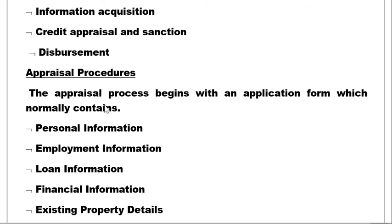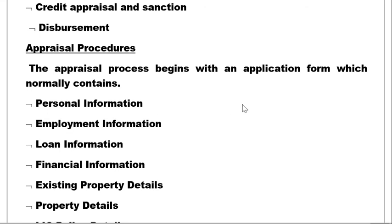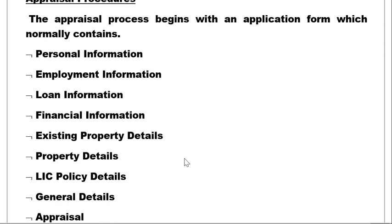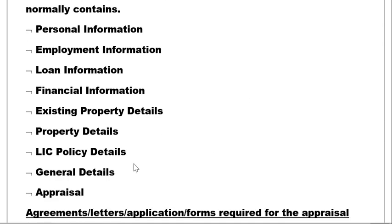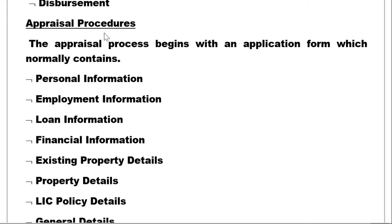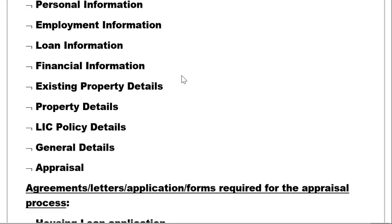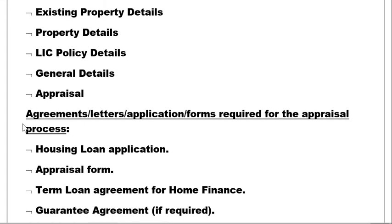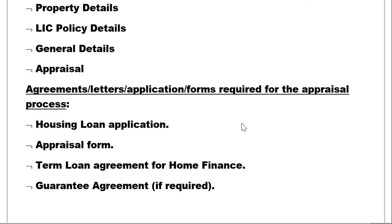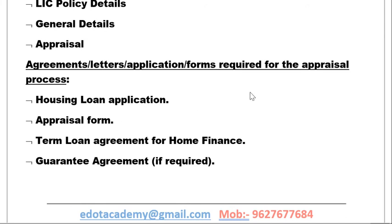The appraisal procedure begins with an application form that normally contains personal information, employment information, loan information, financial information, existing property details, LIC policies, and gender details. For the housing loan appraisal process, key documents include the housing loan application form, appraisal form, and term loan agreement for housing finance.